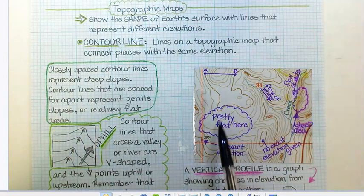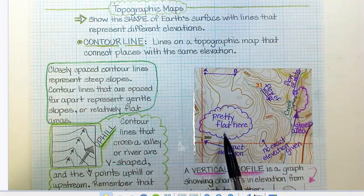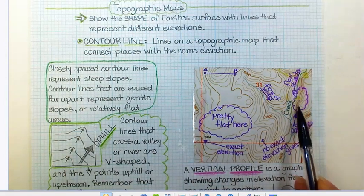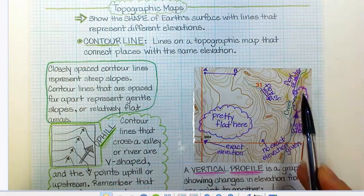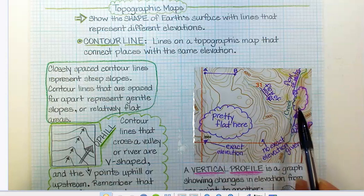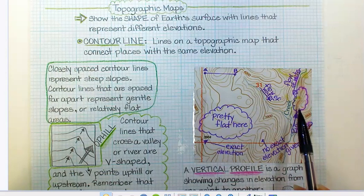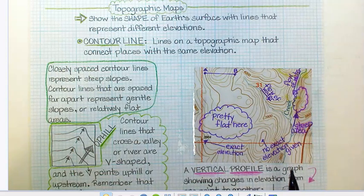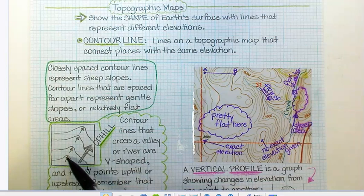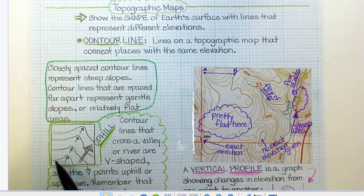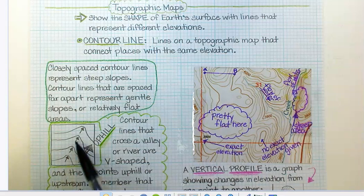Areas that don't have a whole lot of lines are flat. Areas where the lines are really spaced, like are really close together, that indicates somewhere that's steep, either a steep cliff, a steep drop-off, something like that. And if you have a little stream or a river, contour lines will kind of kink and the kinks sort of point you uphill.